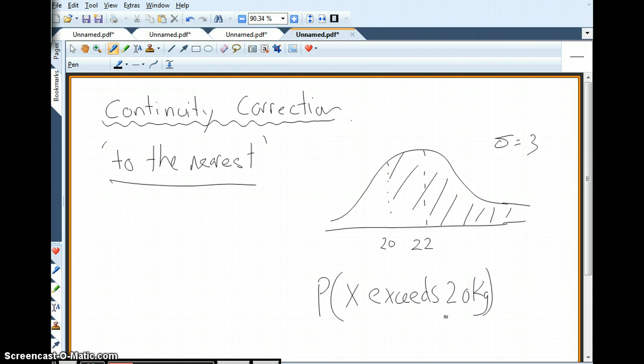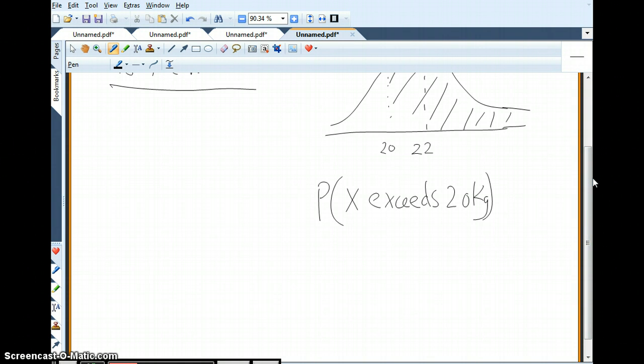Okay, so that's the question, the probability that x exceeds 20. 19.5 would be rounded up to 20, but 19.5, does that exceed 20? It doesn't, does it? Does 21 kilograms exceed 20? Does 20.5 exceed 20? And the answer, yes it does. Okay, so continuity correction means consider the rounding. And for this problem, rather than looking at 20 or the lower limit 20, we would consider x to be greater than 20.5.